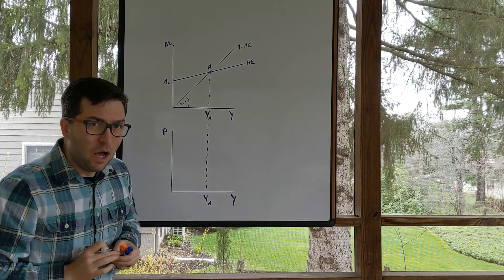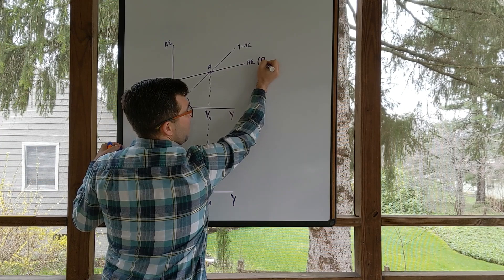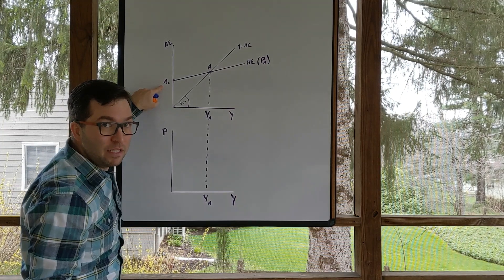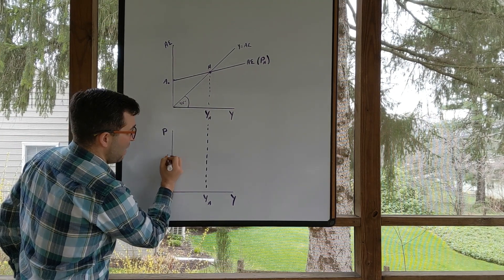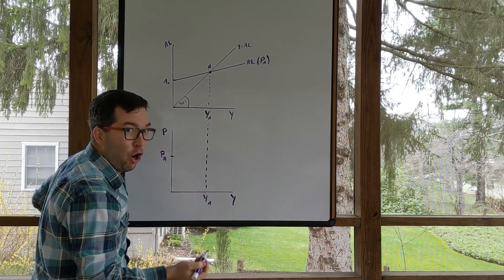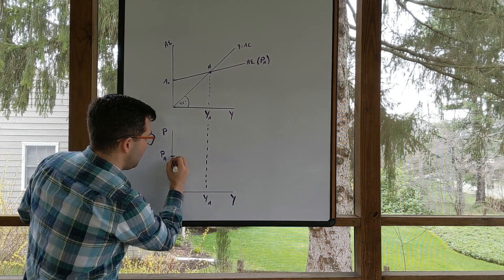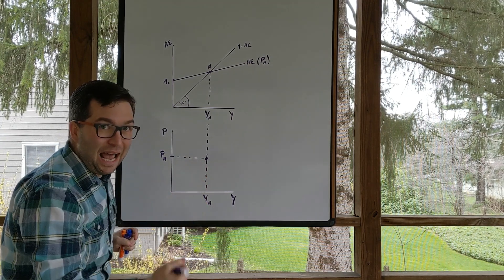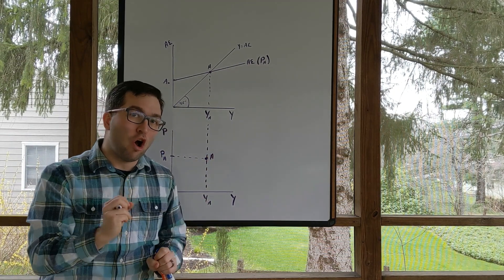Let's assume that this level of aggregate expenditure is associated with some price level A, whatever that price level may be. Because remember, price level impacts autonomous spending through both consumption, investment, and net exports. Let's just go ahead and pick some price level P sub A right here. What this is telling me is this price level creates this aggregate expenditure line, which has this level of output. So here's a combination of price and output that are related — this right here is a single point along our aggregate demand curve.